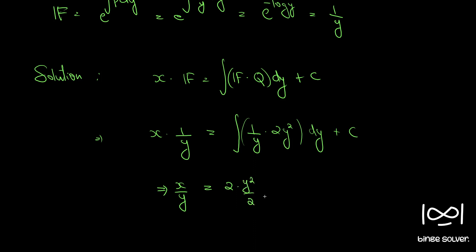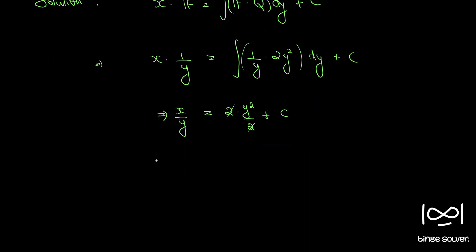So we have x by y equal to 2 into integral of y, y squared by 2y, this cancels. We have x by y equal to y squared plus c. This is our solution, where c is an arbitrary constant.